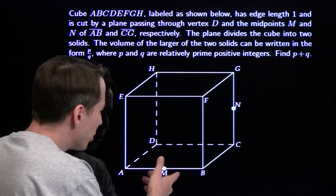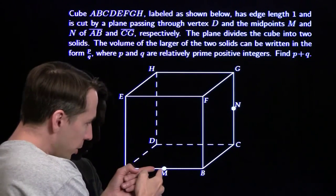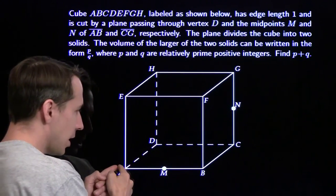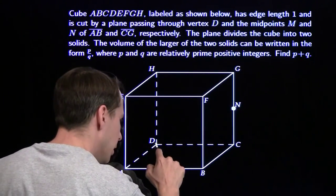Now we're going to take this unit cube and cut it with a plane. We're going to cut it with a plane that goes through vertex D and midpoints M and N of sides AB and CG. I'm going to go ahead and draw that plane in.